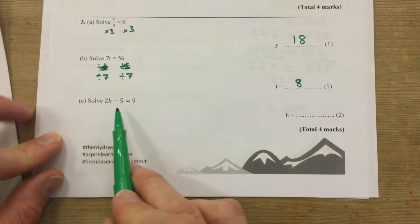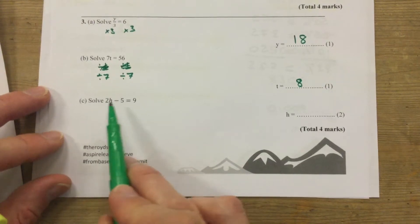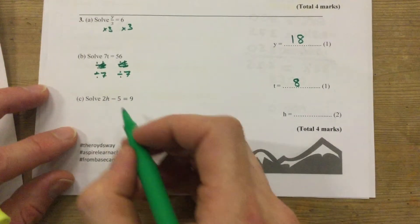You could divide by 2 first - that's the least efficient way to do it. More often than not, get rid of the thing that's plus or minus first. That's what we'll do here.